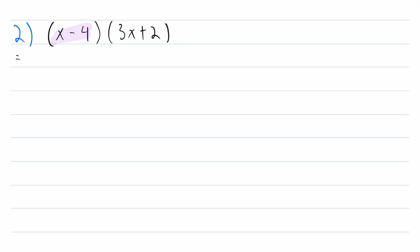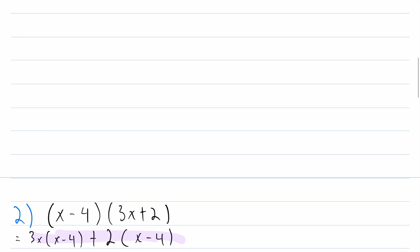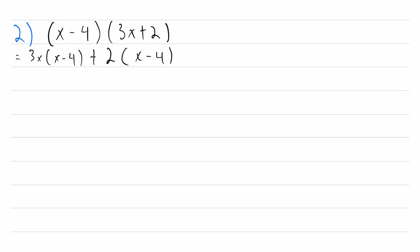First, we have x minus four multiplied by 3x, so I'll write that here: 3x multiplied by x minus four. Continuing to distribute, we have x minus four times positive two, so this will be plus two multiplied by x minus four. Now what we have looks a lot like what we had before — we just need to use the distributive property again. We multiply 3x by x, giving us 3x squared, then 3x multiplied by negative four gives us minus 12x. Then multiplying two by x gives us plus 2x, and two by negative four gives minus eight.